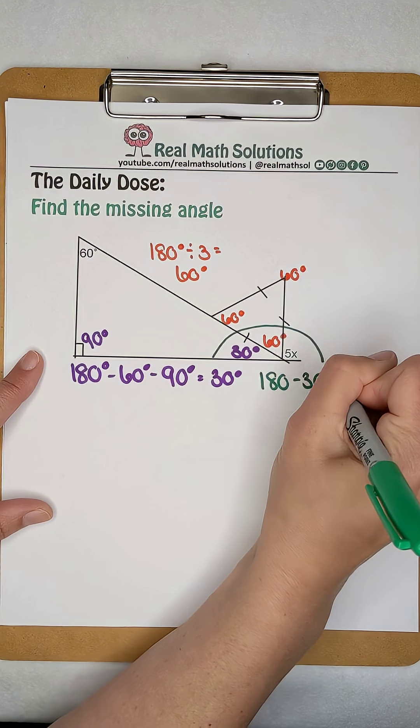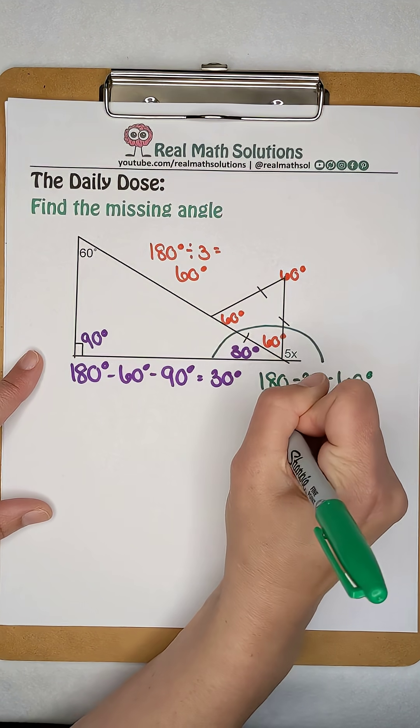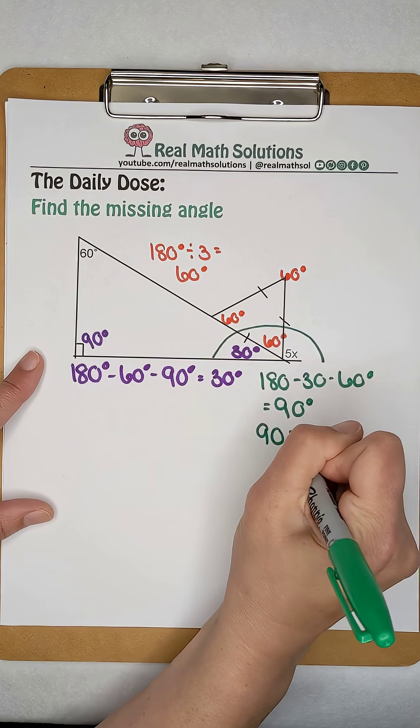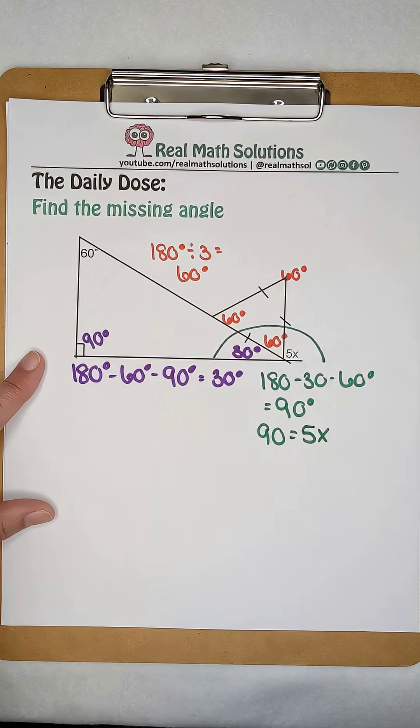I've used up 30 of it and 60 of it, so that leaves 90 degrees. 90 degrees is the value of 5x.